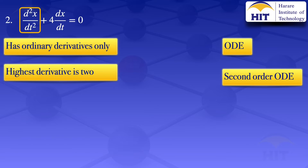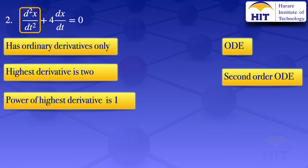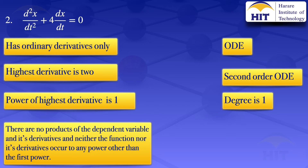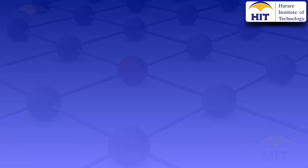Still looking at the highlighted part, the power of that highest derivative is one, and if the power of the highest derivative is one the degree of the given equation is one. Looking at that equation, there are no products of the dependent variable and its derivatives, and neither the function nor its derivatives are raised to any power other than the first power. Therefore by definition that equation is linear.